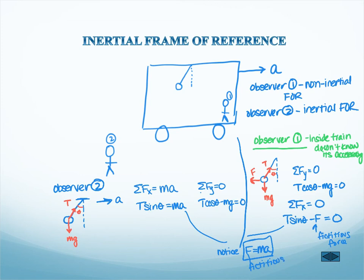And if we compare these two expressions, it turns out that the magnitude of that fictitious force would have to be equal to the mass times the real acceleration of the train.